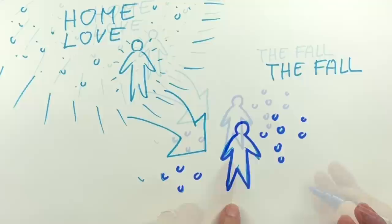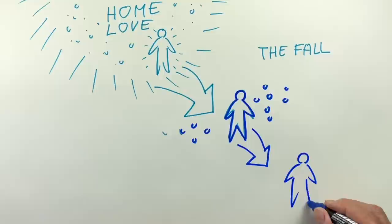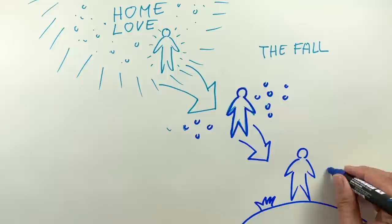And as these Fall beings continued their violation against their divine heritage, the density that we call human beings emerged very gradually. And their gradual condensation also enveloped and condensed everything around them, like the spiritual planets that were their dwelling places, as well as the other nature kingdoms around them.